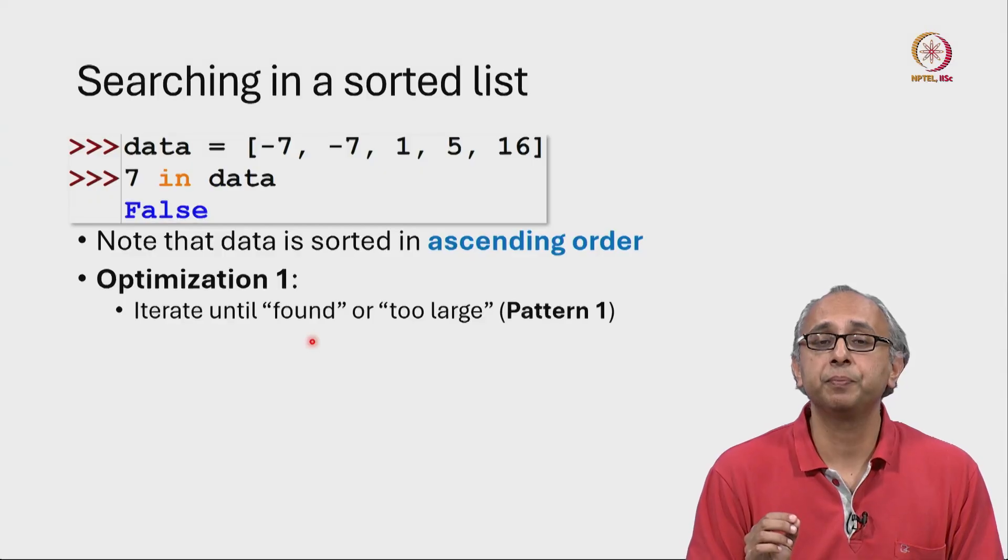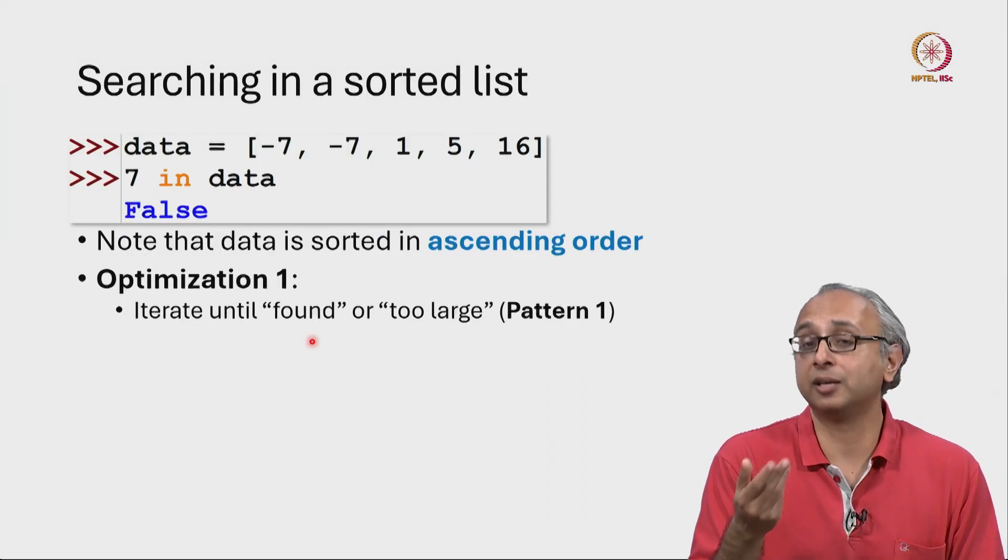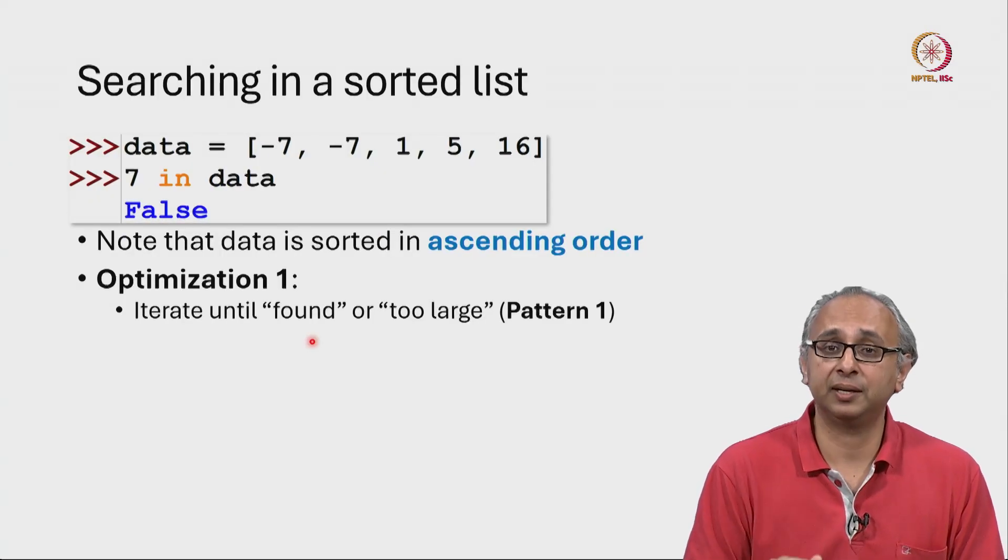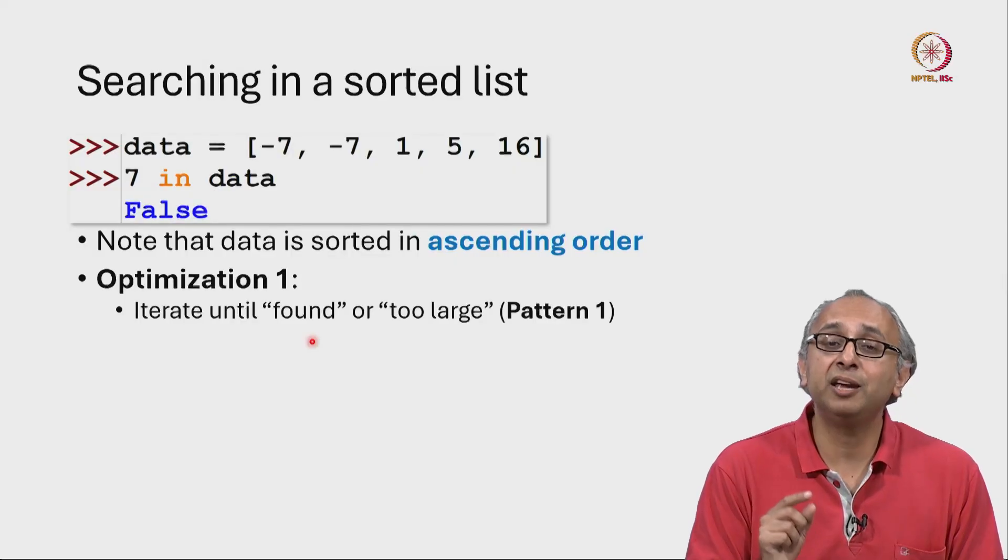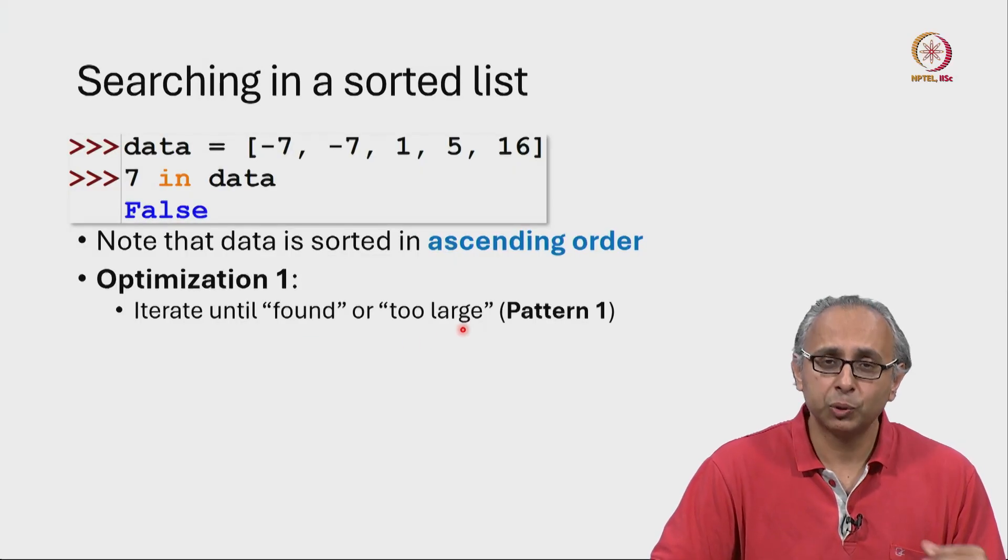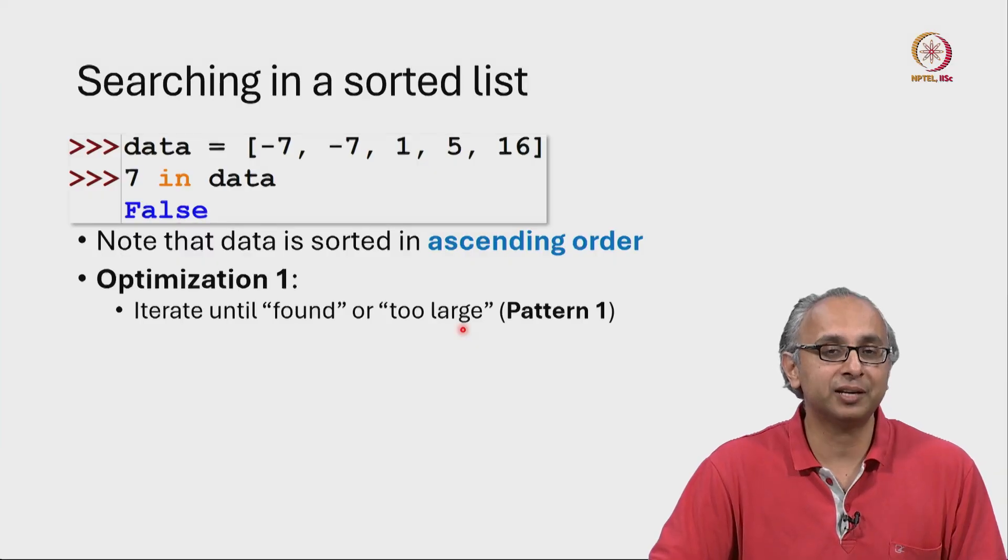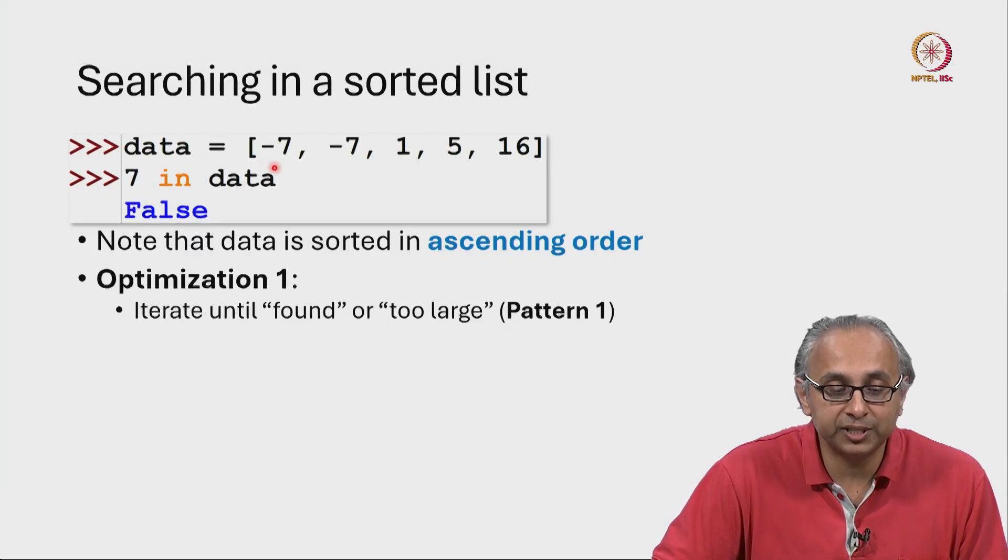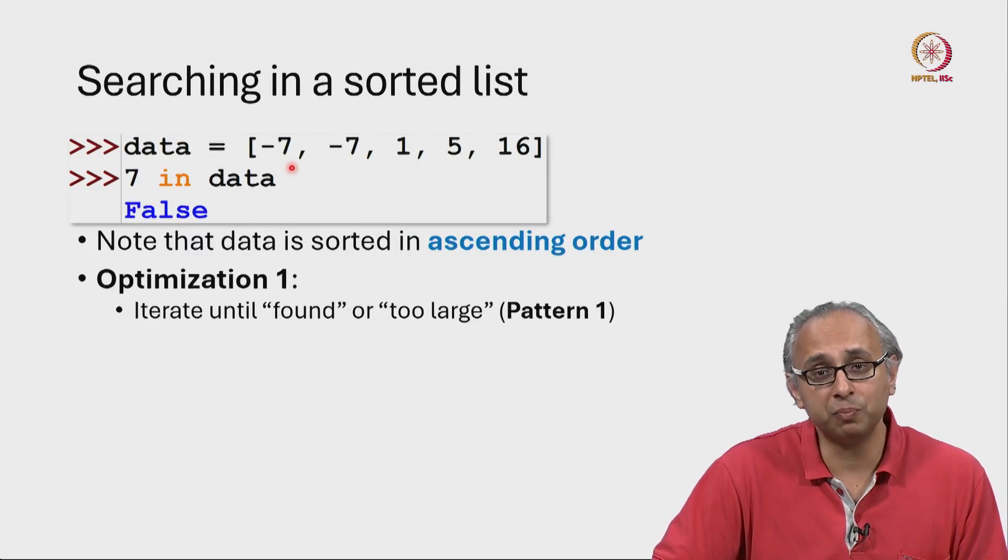we can improve the situation by searching until we find that item, just like linear search, or if we find an item that is too large. So we can modify our iterate until success by searching for 7 here. Well, that is too small,